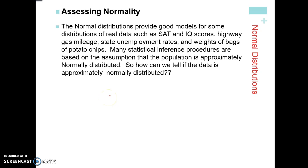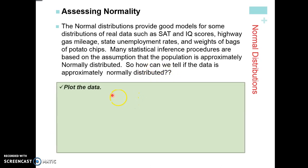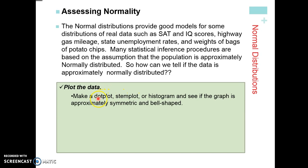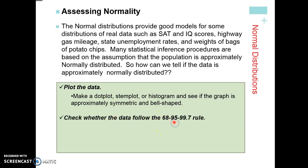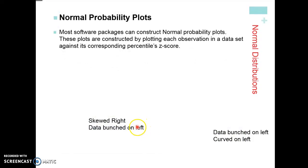How can we tell specifically if data is approximately normally distributed? We can only use statistical inference procedures if we know it's approximately normally distributed. Number one: plot the data — make a dot plot, stem plot, or histogram — and make sure that your graph is approximately symmetric and bell-shaped. Another way to check is to follow whether it follows the 68-95-99.7 rule. Count how many observations are within one, two, and three standard deviations from the mean, calculate those percentages. If it falls close to those percentages, maybe one or two off, then it's approximately normal.